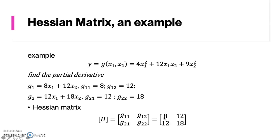One important use of the Hessian matrix that you will encounter is in optimization, where you conduct the second derivative test. This step is used to find the maximum or minimum of a multivariable function, and the Hessian matrix helps you do that.